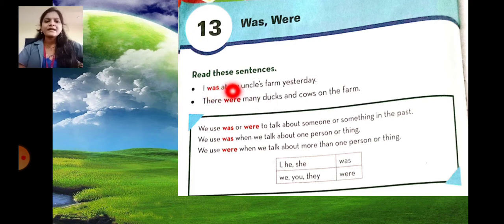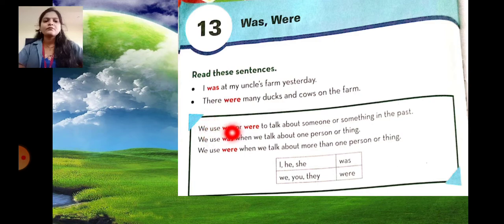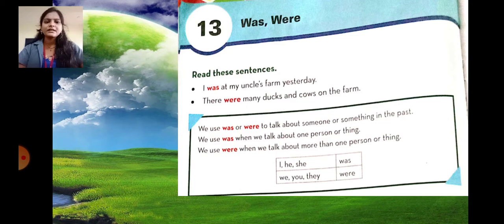I was at my uncle's farm yesterday. There were many ducks and cows on the farm. So students, we use was or were to talk about someone or something in the past. We use was when we talk about one person or thing. We use were when we talk about more than one person or thing.